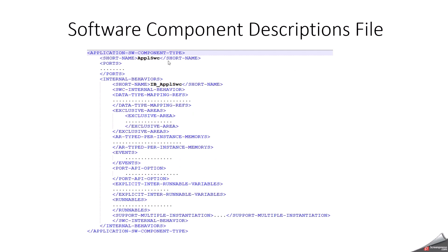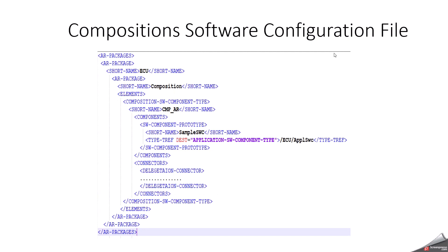Now let's look at the Software Component Description file in detail. Here I have created an Application Software Component Type named ApplicationSoftwareComponent. It will have ports — P-port, R-port, or PR-port. For the internal behavior, it describes the complete behavior of your software component: exclusive areas, data type mapping references, per-instance memory configuration, events, port AP options, inter-runnable variable configuration, and runnable configuration. All these things are in the software component description file.